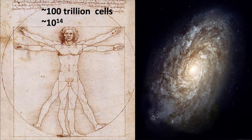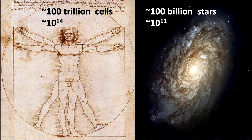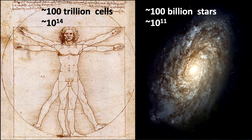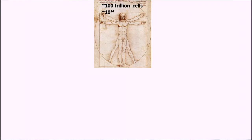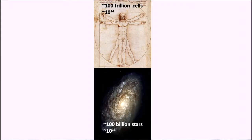That's a big number, but astronomers study galaxies, which are big too. A galaxy has about a hundred billion stars — that's 10 to the 11. So your body has a thousand times more cells than a galaxy has stars. Here's Vitruvian Man, here's a galaxy — let's compare them more carefully.